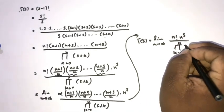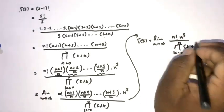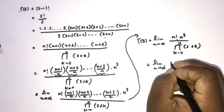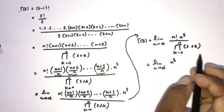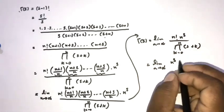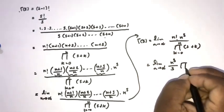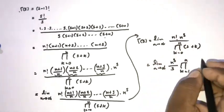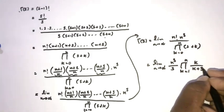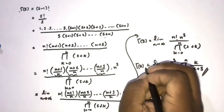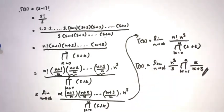After simplification, those terms approaching 1 drop out, and gamma of s equals the limit as n approaches infinity of n^s · n! over the product from k equals 0 to n of (s+k). Separating the k=0 term (which gives s) from the rest, this becomes n^s · n! over s times the product from k equals 1 to n of (k + s). This is the Gauss representation of the gamma function. Thank you for watching.